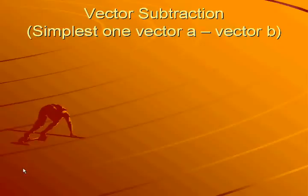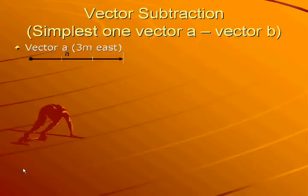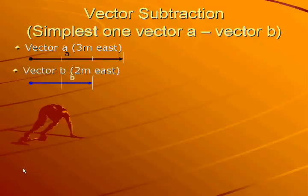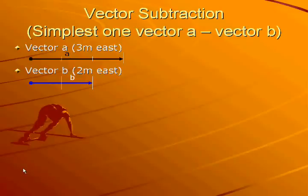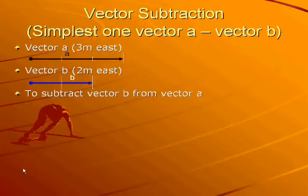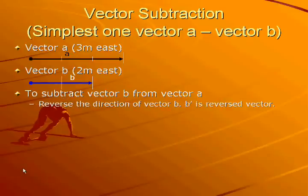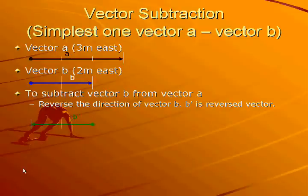Here is a simple example of vector subtraction. The first vector is vector A, which is a displacement vector of 3 meters to the east, shown by this black arrow. The second vector is vector B, which is a displacement vector of 2 meters to the east, shown by the blue arrow. To subtract vector B from vector A, first reverse the direction of vector B. B-stroke is the reversed vector. Here is vector B, and when we reverse it we get B-stroke, shown by the green arrow.